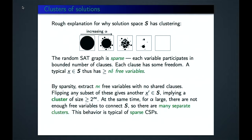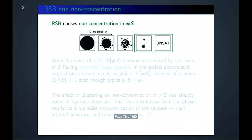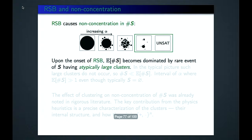For large alpha close to alpha-SAT, there are not enough free variables to keep the solution space connected. You can make moves of size one, but with only N^delta free variables (delta very small), the space will eventually break into separate clusters. This behavior is typical of sparse constraint satisfaction problems.